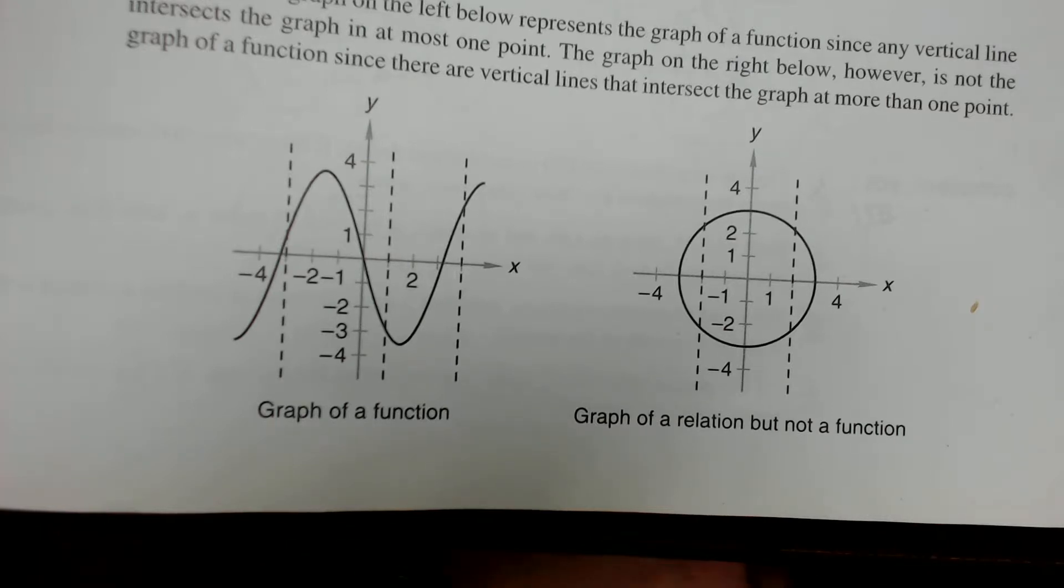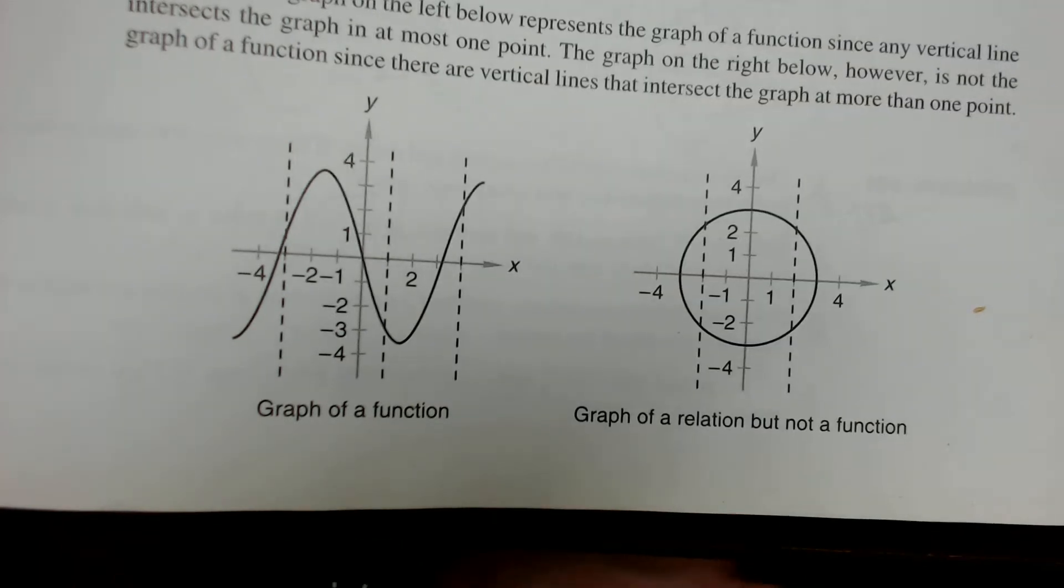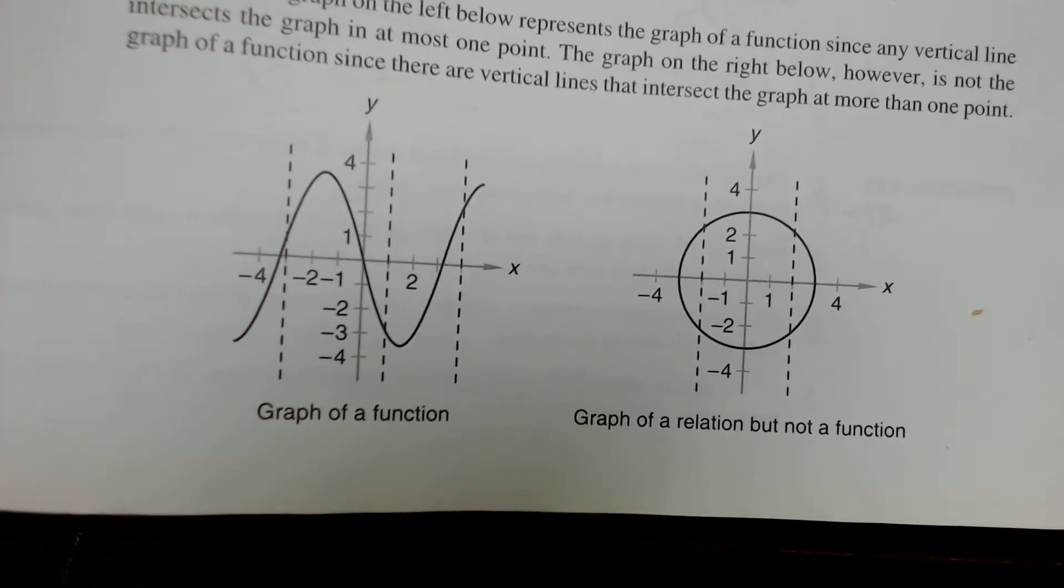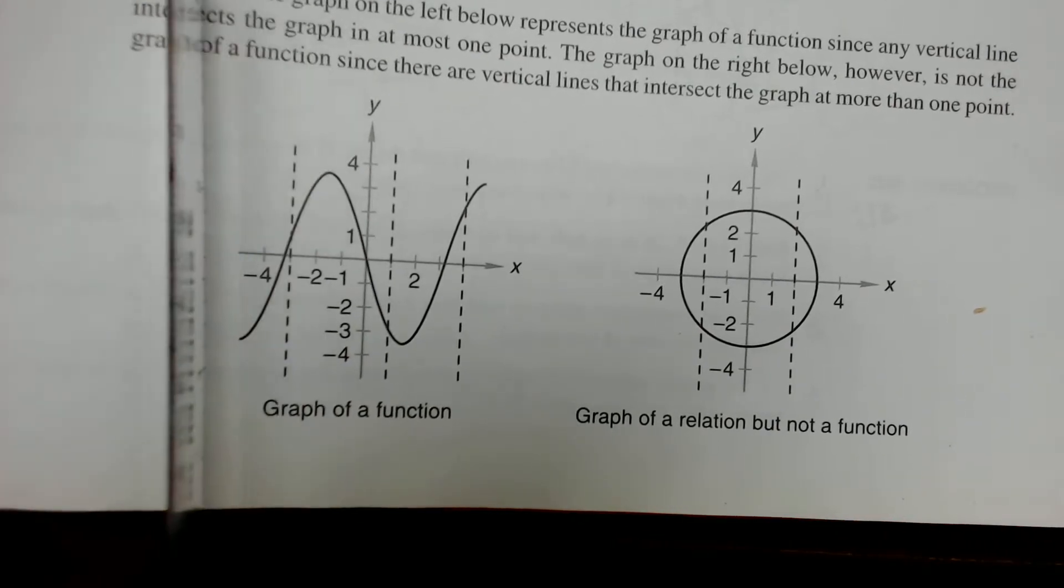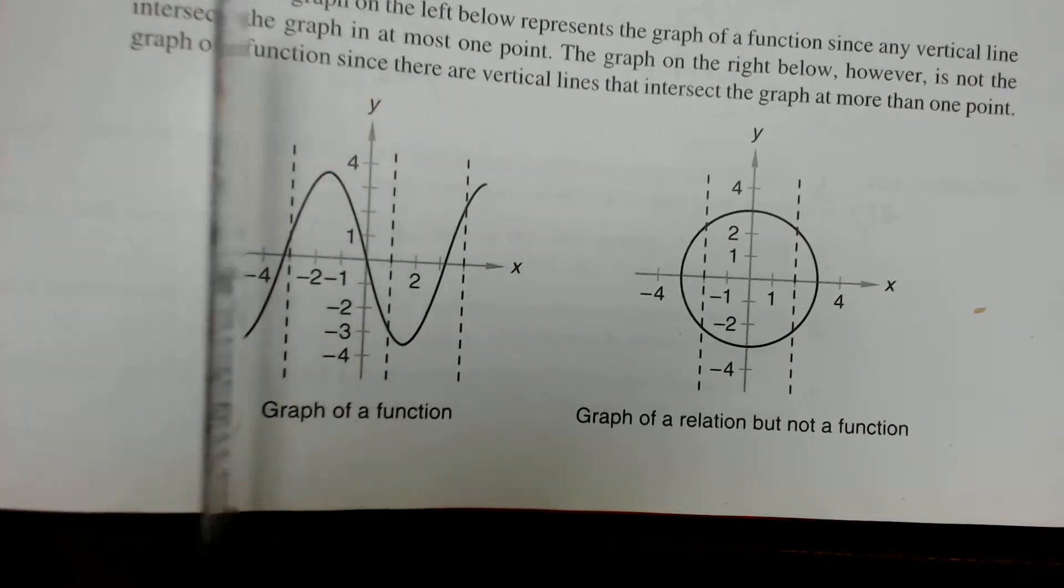The vertical line test says that if you were to take a vertical line and trace it across the function, we should only ever touch the function at one point. Actually, the sheet of paper is a good example. I'm going to get a ruler. If we take a vertical line and trace it across the function, we should only ever touch the function at one point.